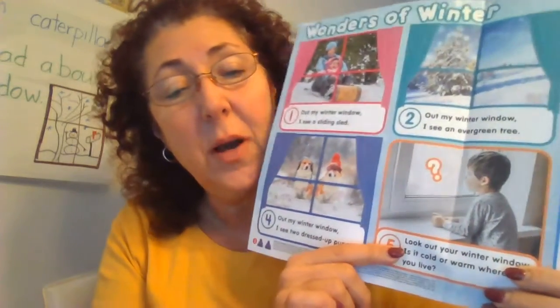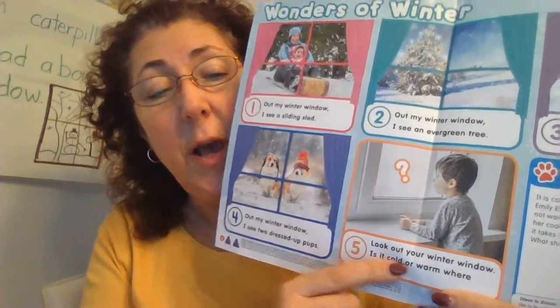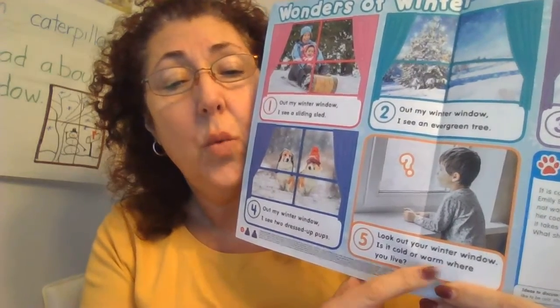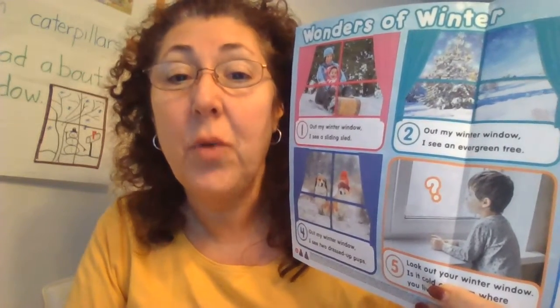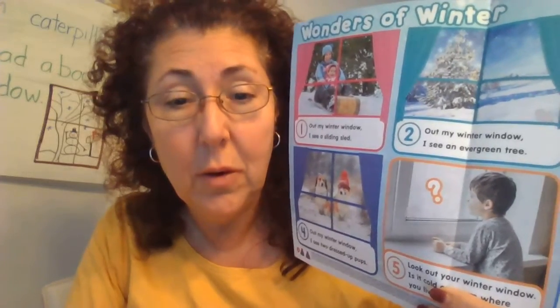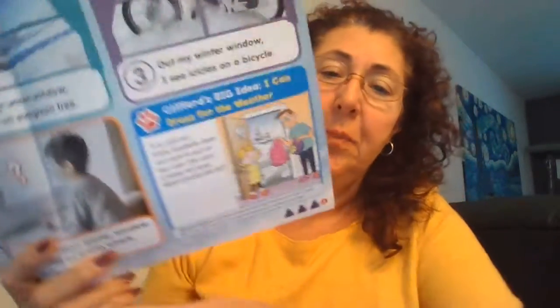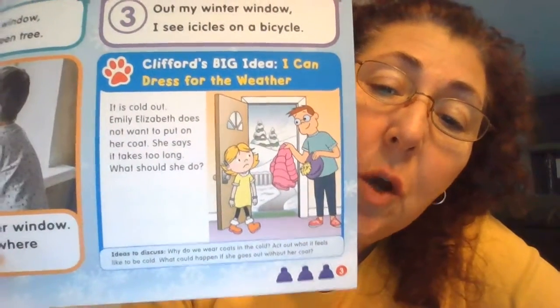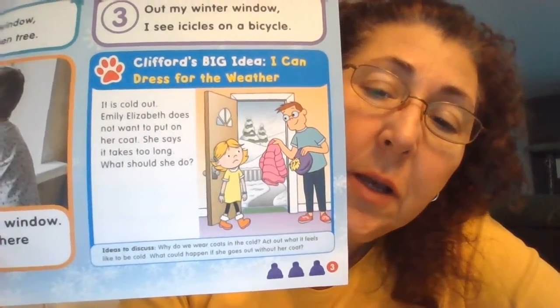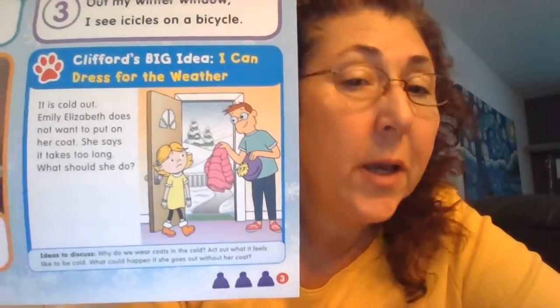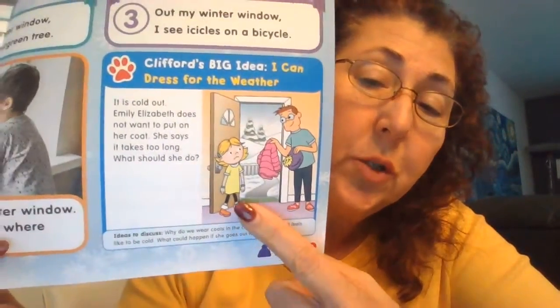Let's look at the orange box. It says look out your winter window — is it cold or warm where you live? It's cold! It's a cold day today. Right now outside my window it's snowing. So it looks like outside it's very cold, there's snow on the evergreen trees. I guess that's her dad — what do you think he's telling her? He's saying it's cold out, put on your coat. Does she want to put on her coat?